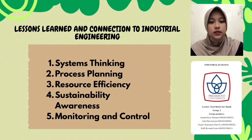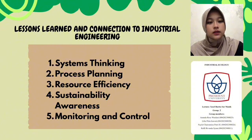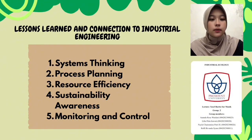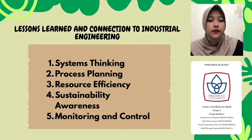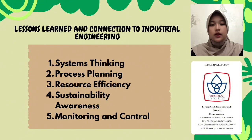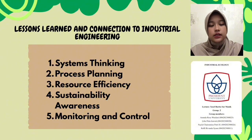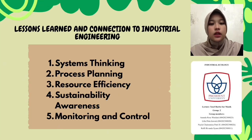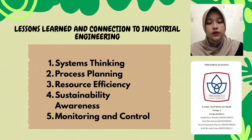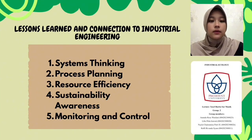The lessons we learned from this project: First, system thinking — a terrarium functions as a small self-contained ecosystem, just like a company or production system. Each component such as soil, water, air, and plants must work together efficiently to maintain balance and sustain life, illustrating how interconnected elements must operate as a system to achieve overall performance. Second, process planning — creating a terrarium involves sequential steps including layering materials, selecting suitable plants, and maintaining the right environment, reflecting the importance of structured procedures that lead to consistent and reliable outcomes. Third, resource efficiency — since a terrarium has limited space and materials, all resources must be used efficiently with minimal waste, aligning with lean manufacturing principles that minimize unnecessary use of time, material, and energy.